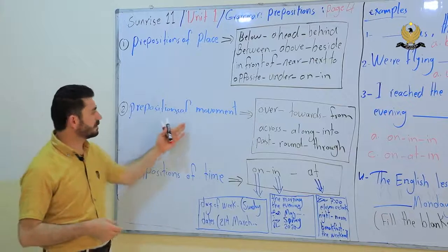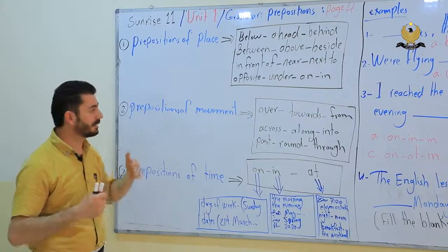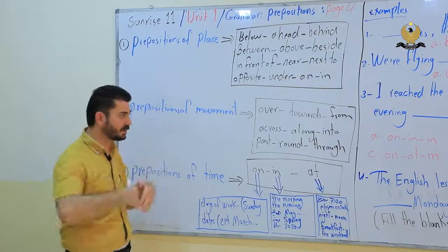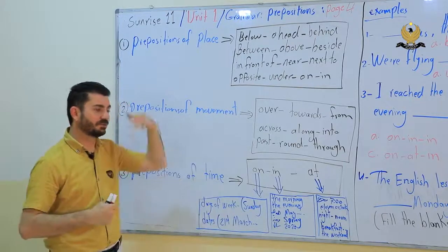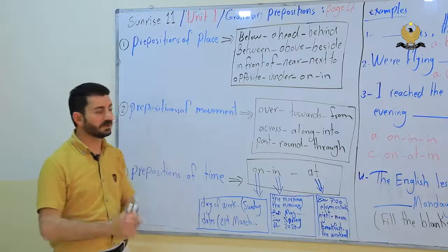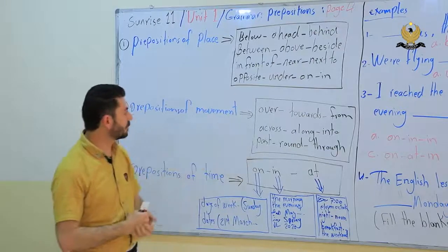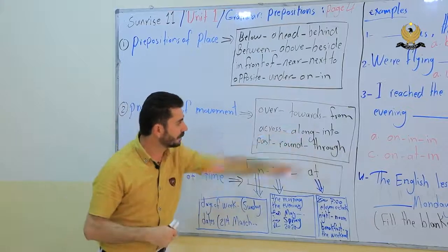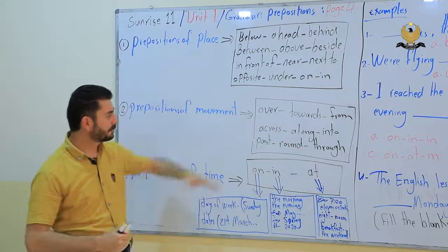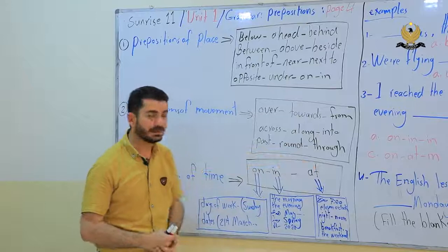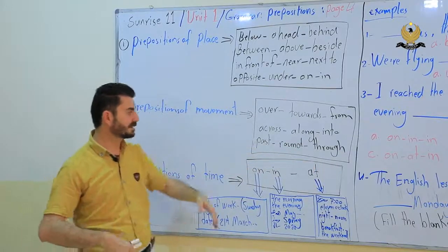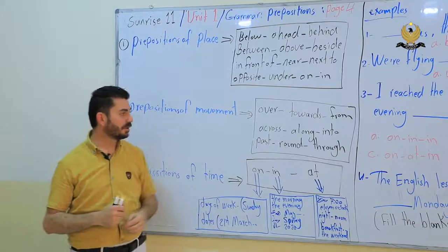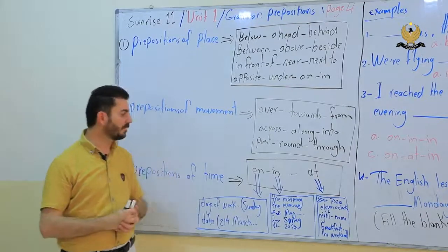The second one, preposition of movement. When you look at the movement, it is called over, towards, from, across, along, into, past, round and through. These are the prepositions of movement.